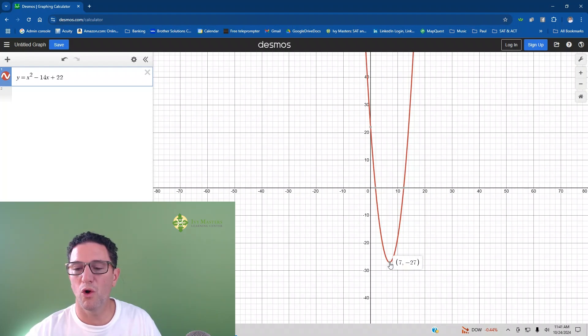Anyway, all you have to do is roll over and it'll say 7 negative 27. Once again, it's asking for the X part of the minimum. So your answer is 7.